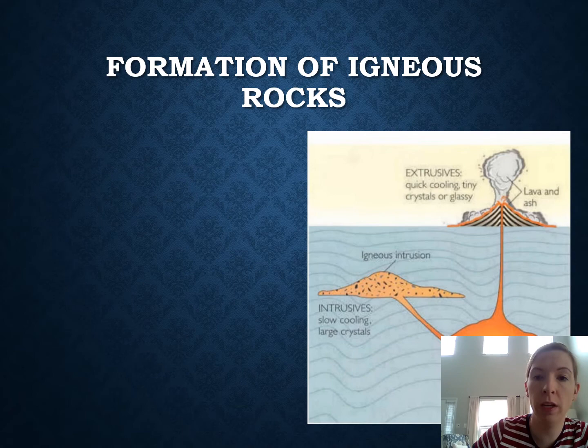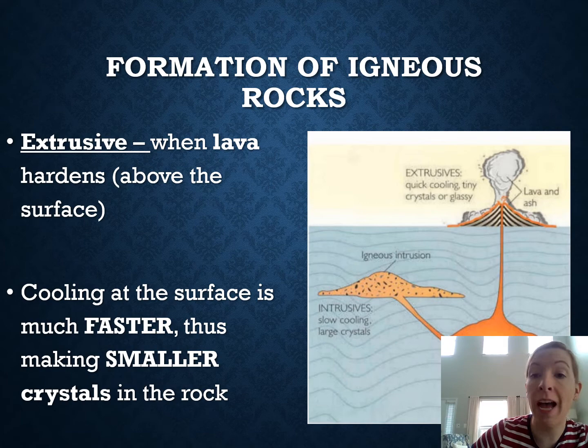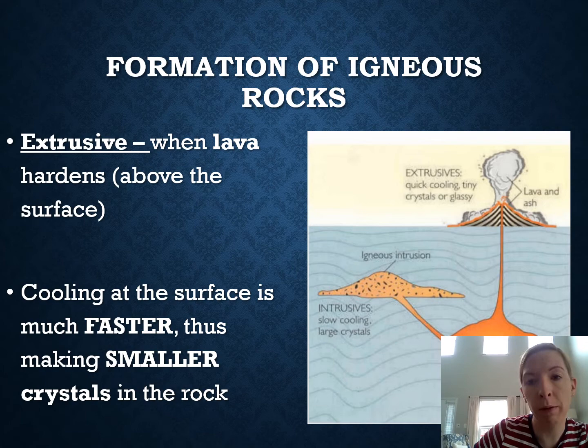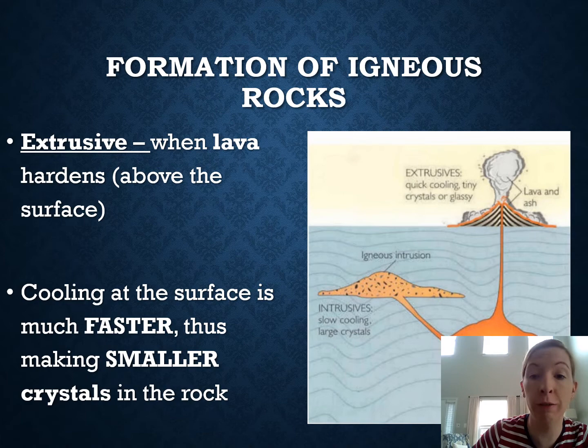An igneous rock can also be extrusive, meaning it cooled outside the volcano. It will cool much faster due to contact with the air, so crystals might not form at all or may be very tiny. It might have a glassy texture or even a vesicular texture where holes formed from gas bubbles popping. Extrusive igneous rocks will have a different texture than intrusive igneous rocks.